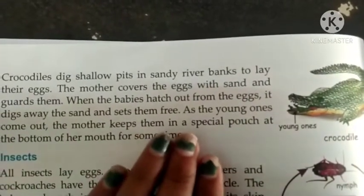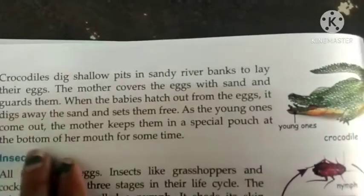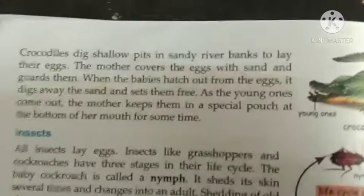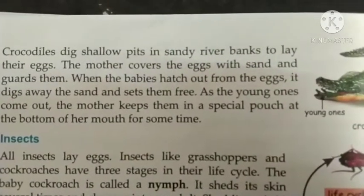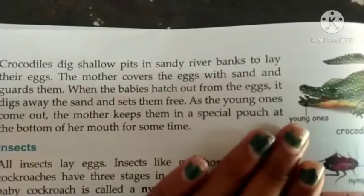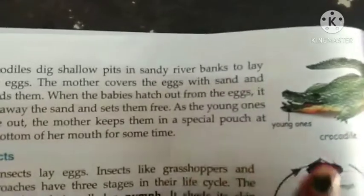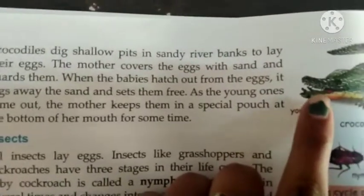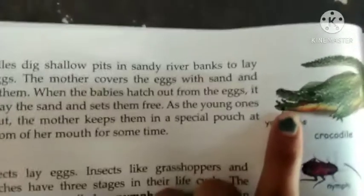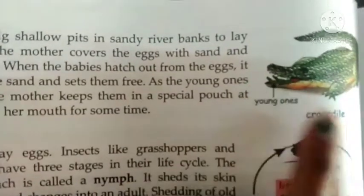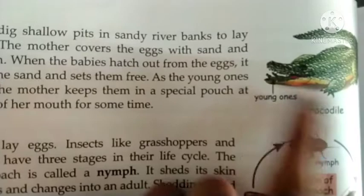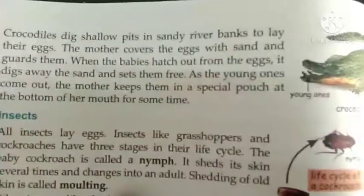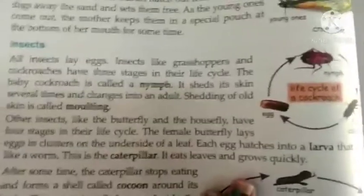As the young ones come out, the mother keeps them in a special pouch at the bottom of her mouth for some time. You can see in the picture — the young ones are inside the crocodile's mouth. This is the process of crocodile reproduction.